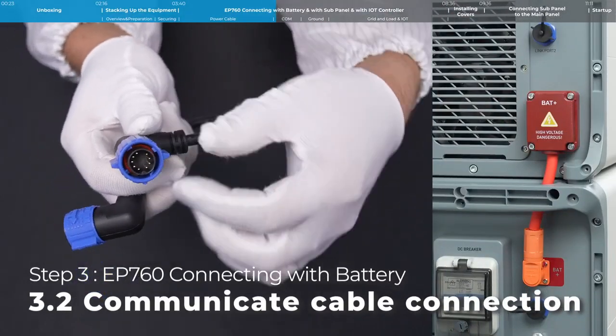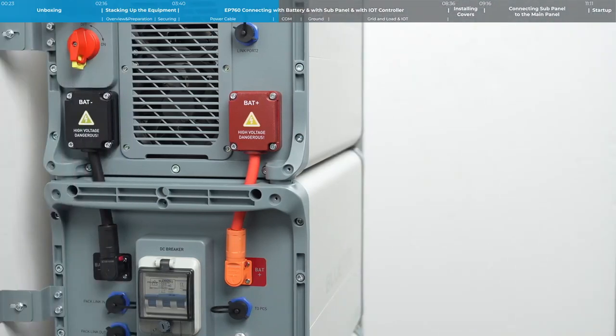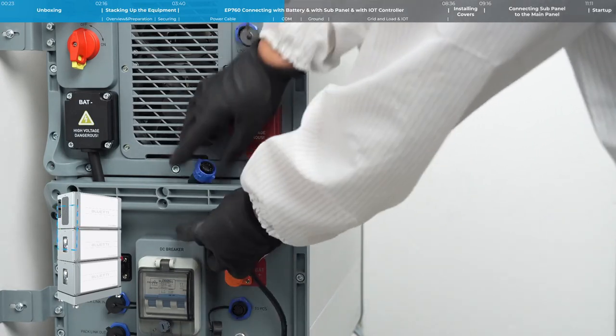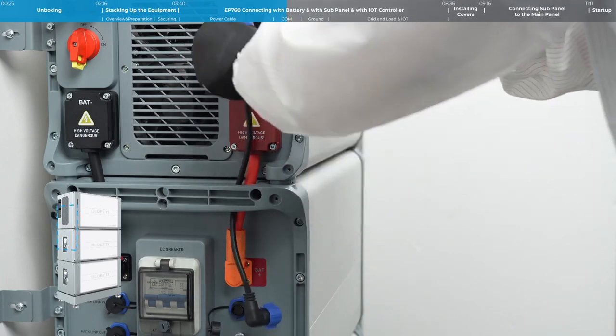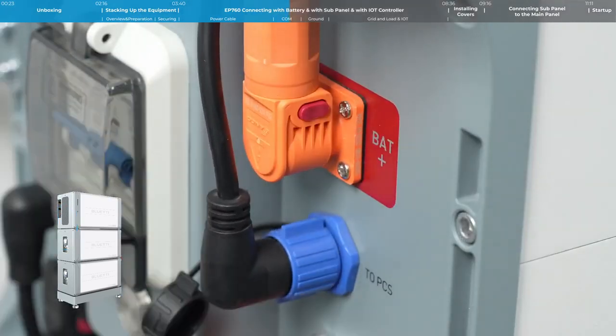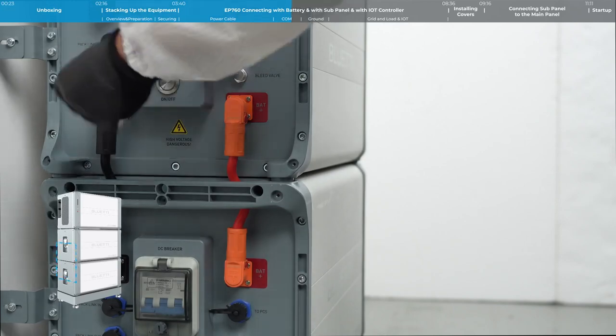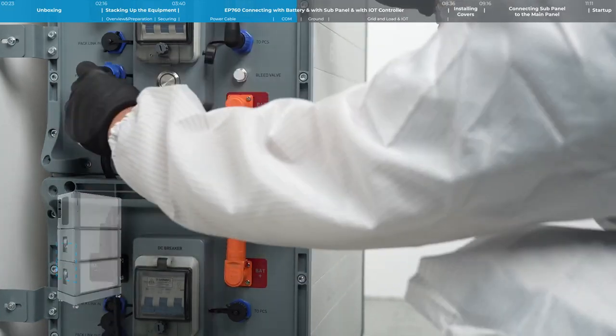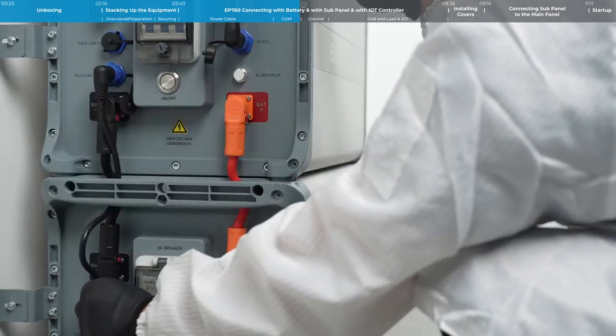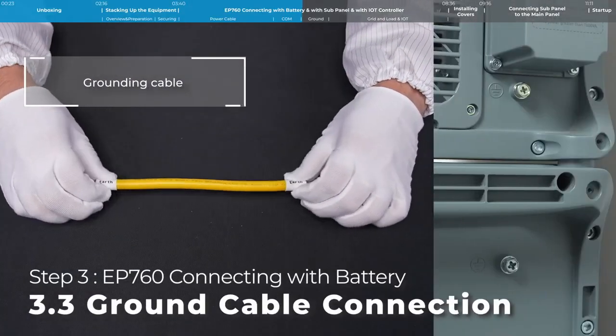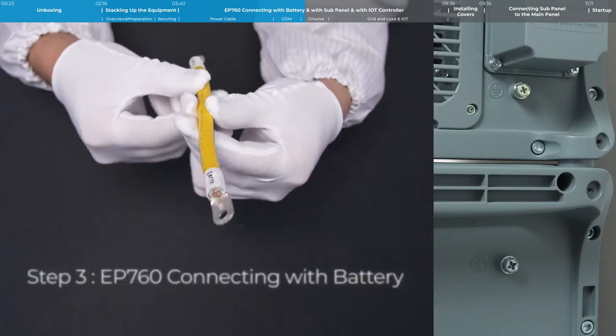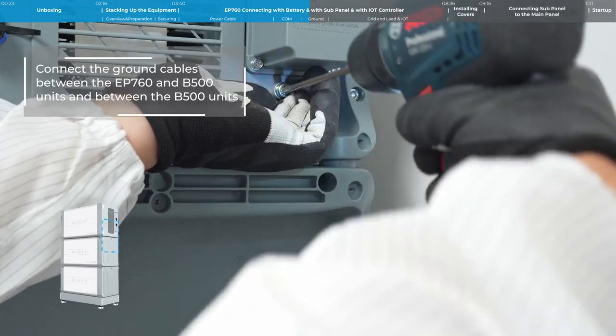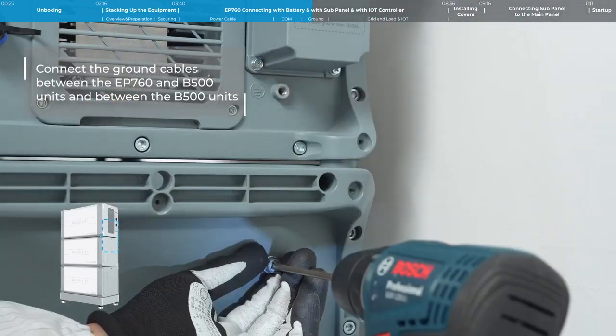Both ends of the communication cable have a quick release structure. Connect the communication cable. The ground wire is a yellow-green copper wire. Connect the ground wires between the EP760 and B500 units and between the B500 units.